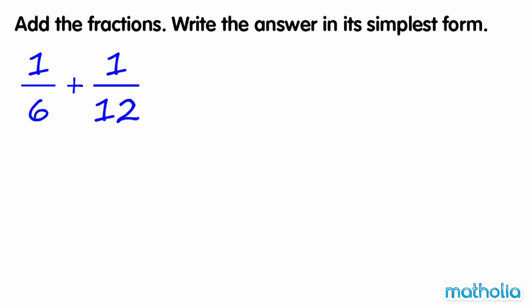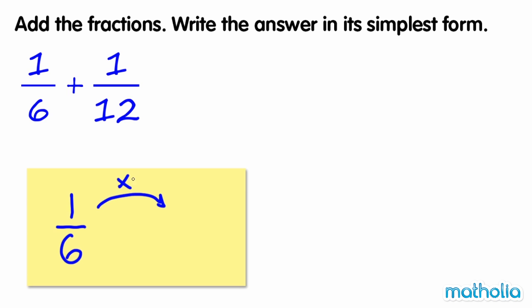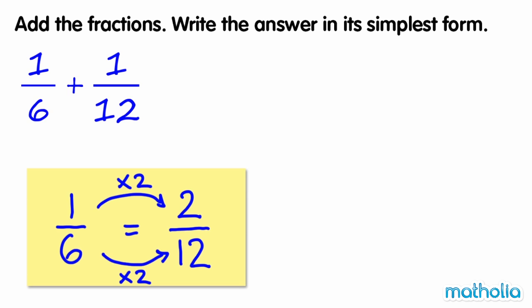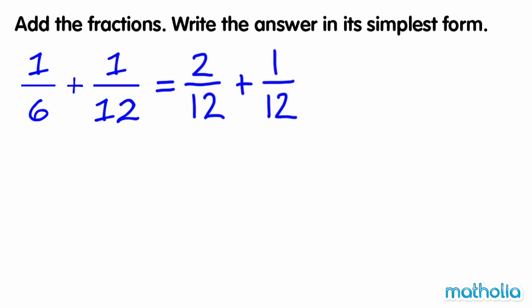Let's find an equivalent fraction of one-sixth where the denominator is equal to twelve. One-sixth is equal to two-twelfths. Two-twelfths is an equivalent fraction of one-sixth. So we can rewrite the equation: one-sixth plus one-twelfth is equal to two-twelfths plus one-twelfth. The denominators are now the same.